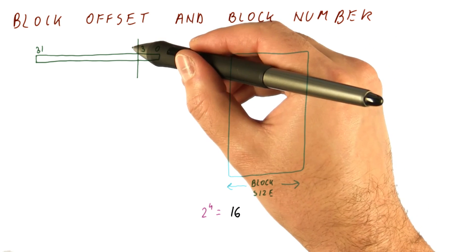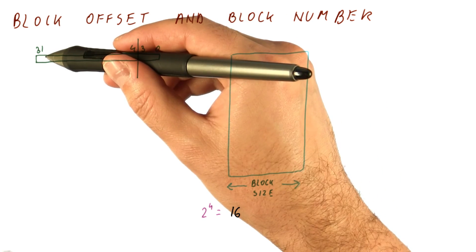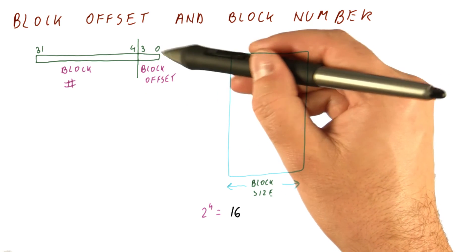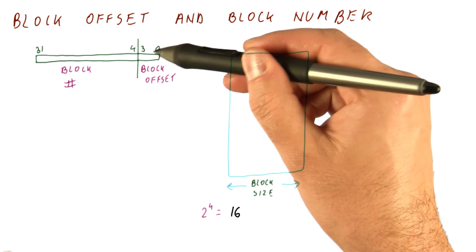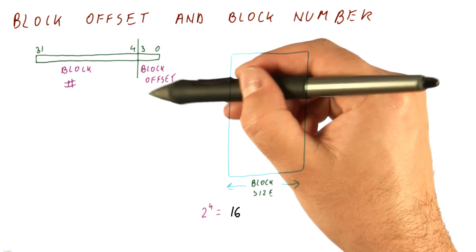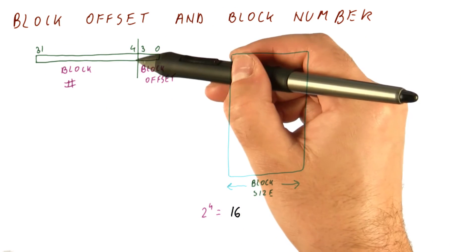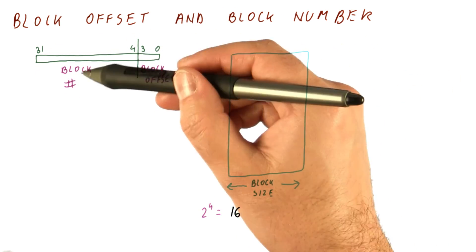The remaining bits, bits 4 through 31, tell us which block we are trying to find. These bits that tell us where in the block we will find our data are called the block offset, and the bits that tell us which block we are interested in are called the block number.